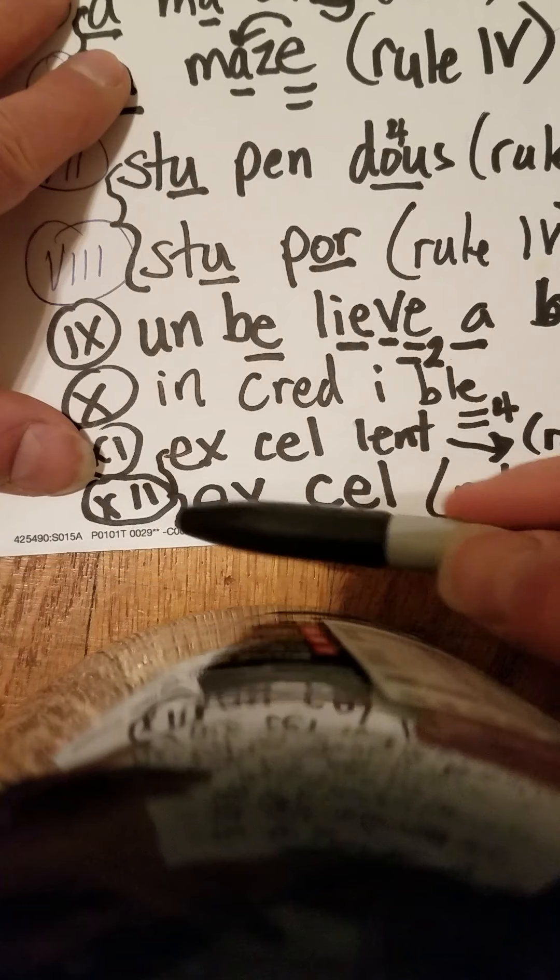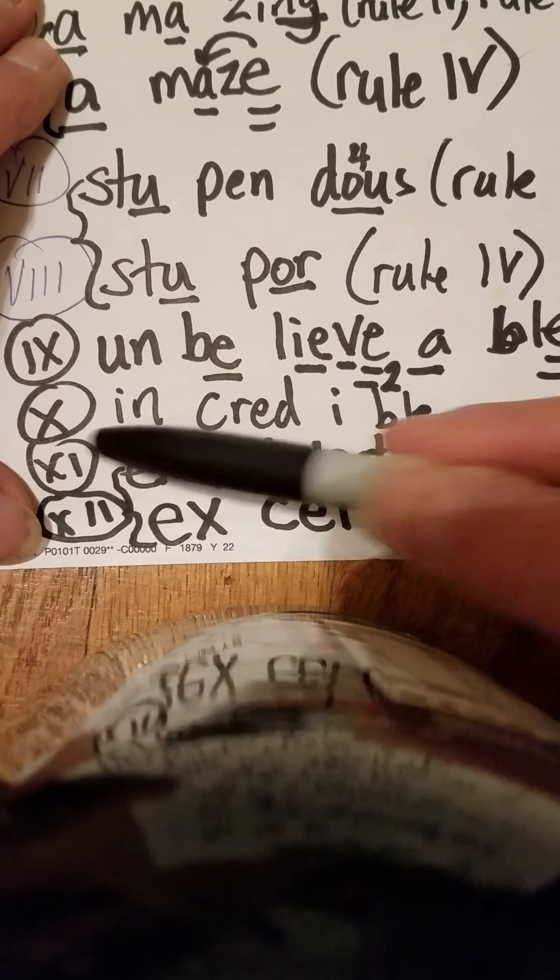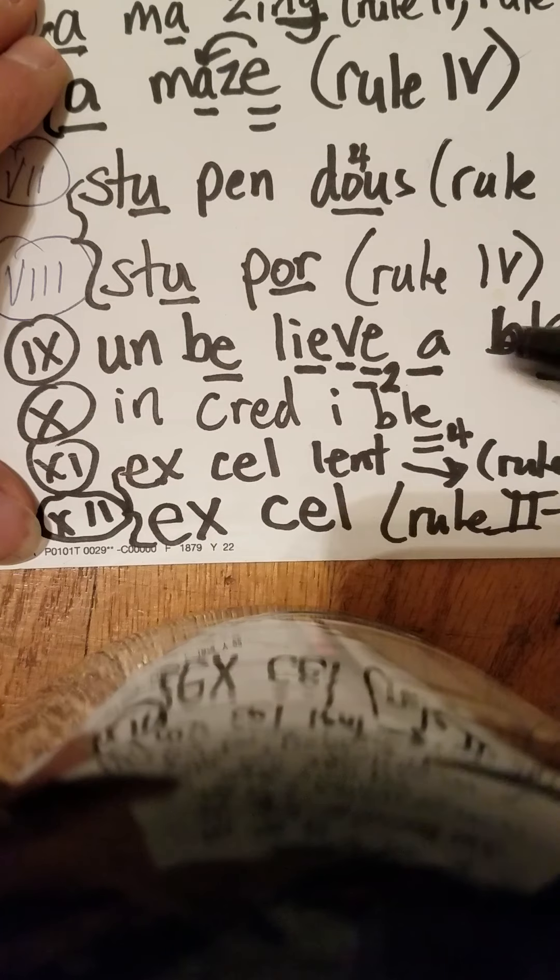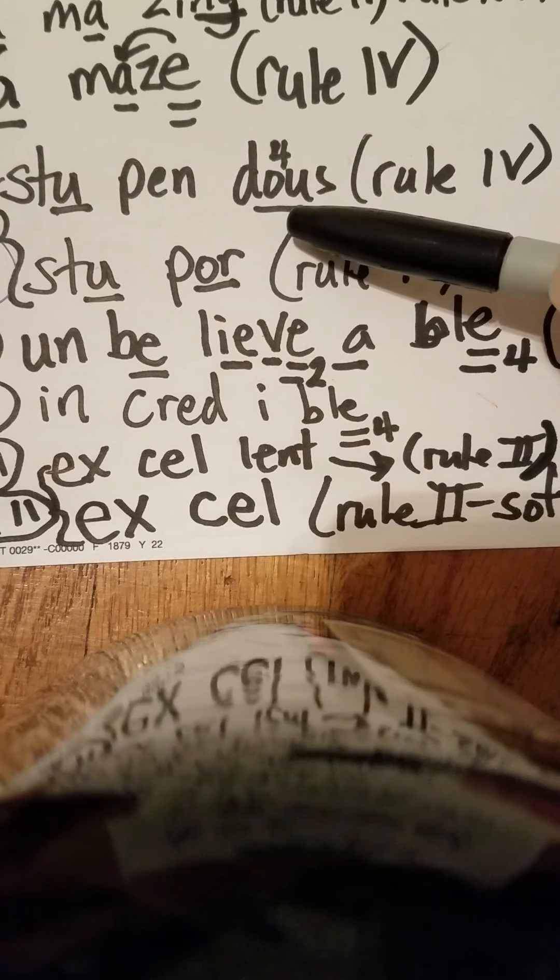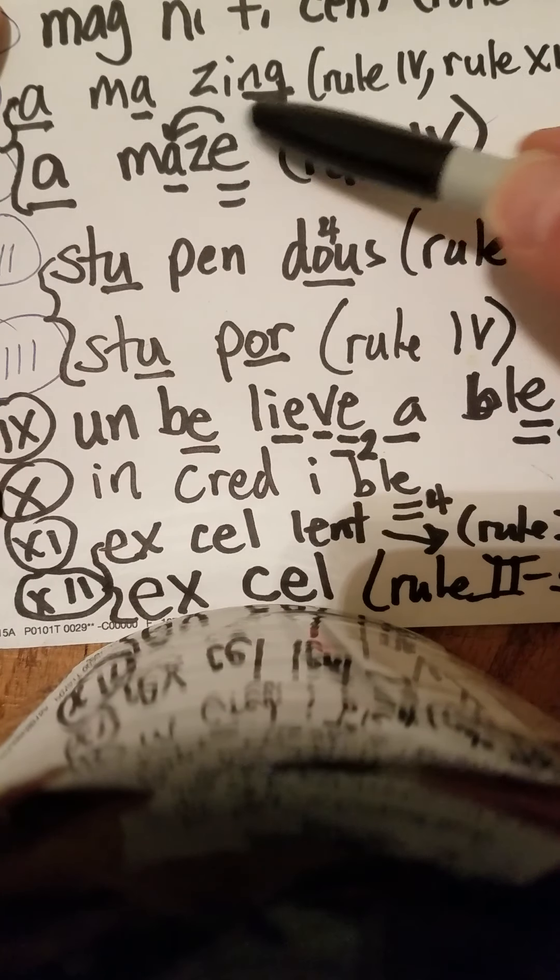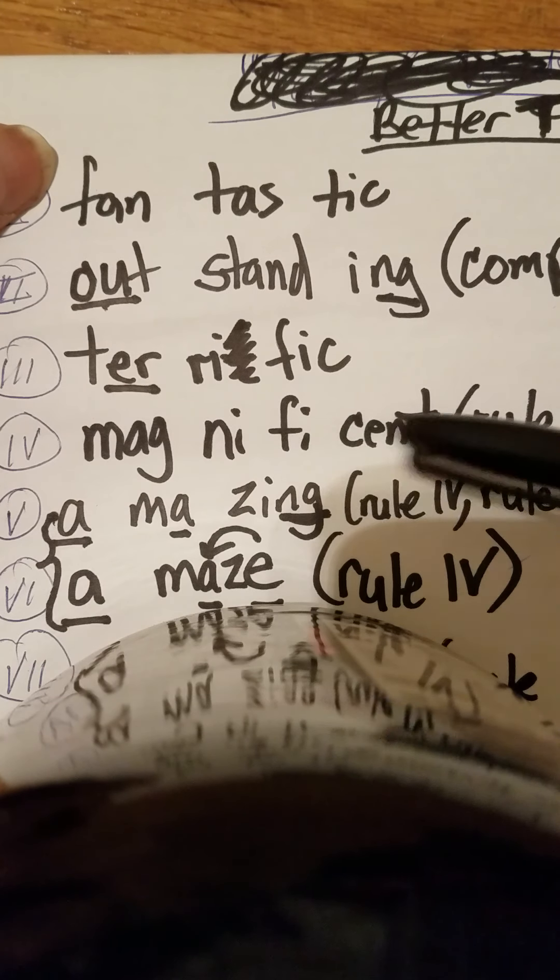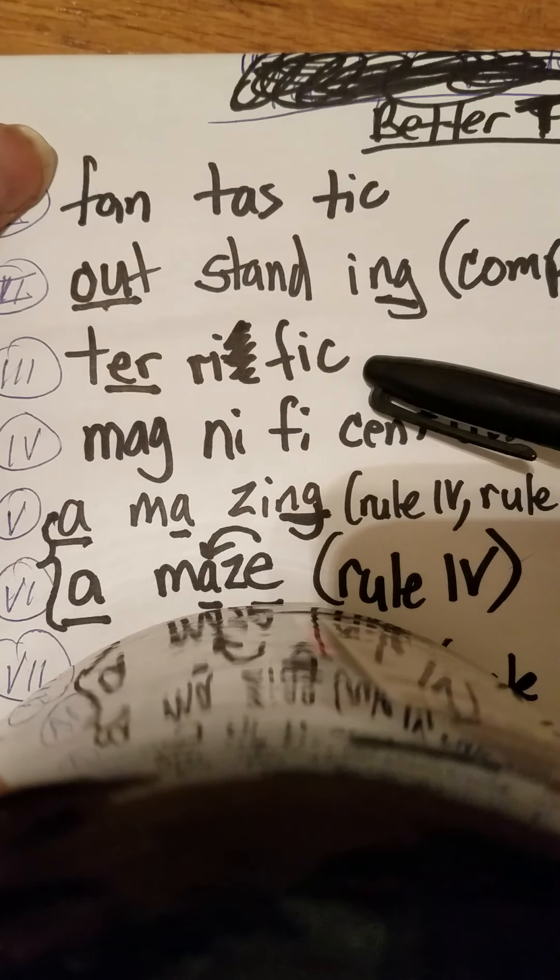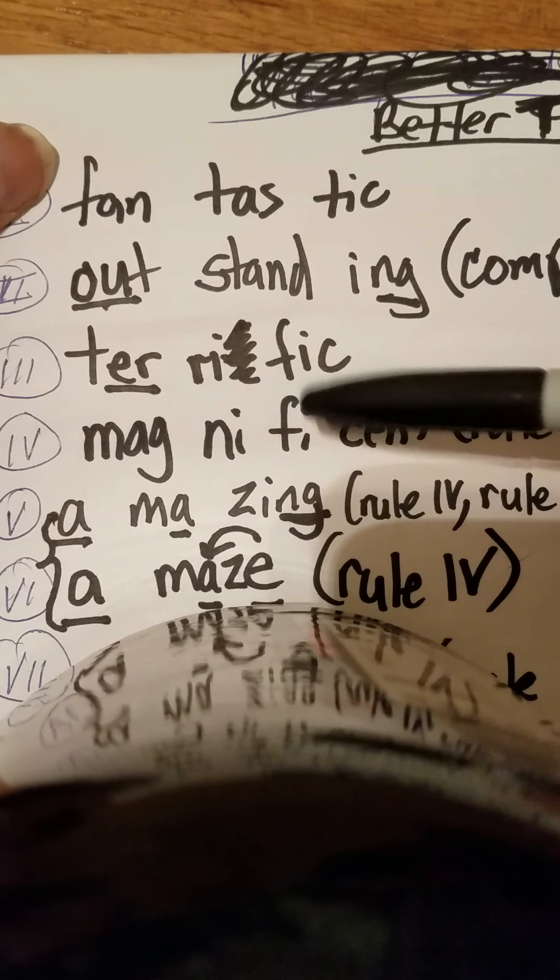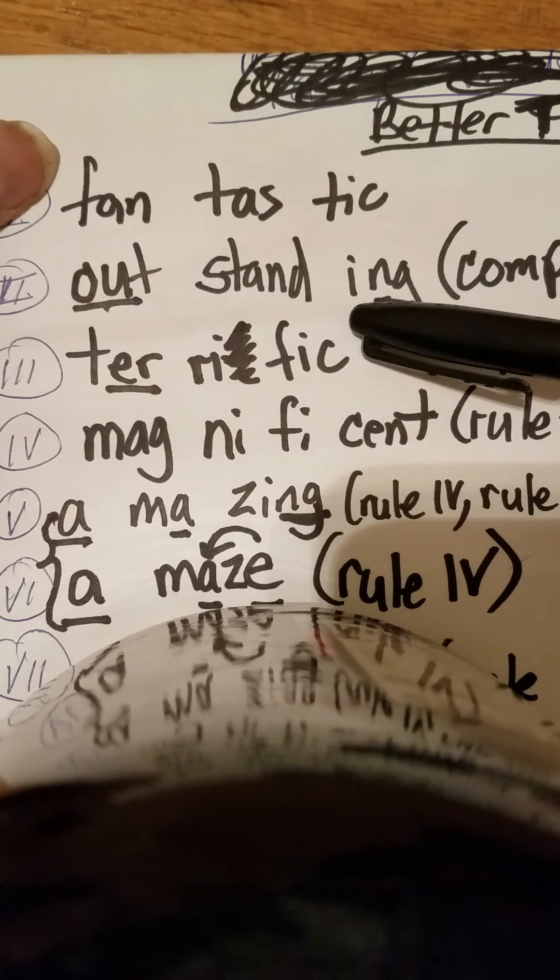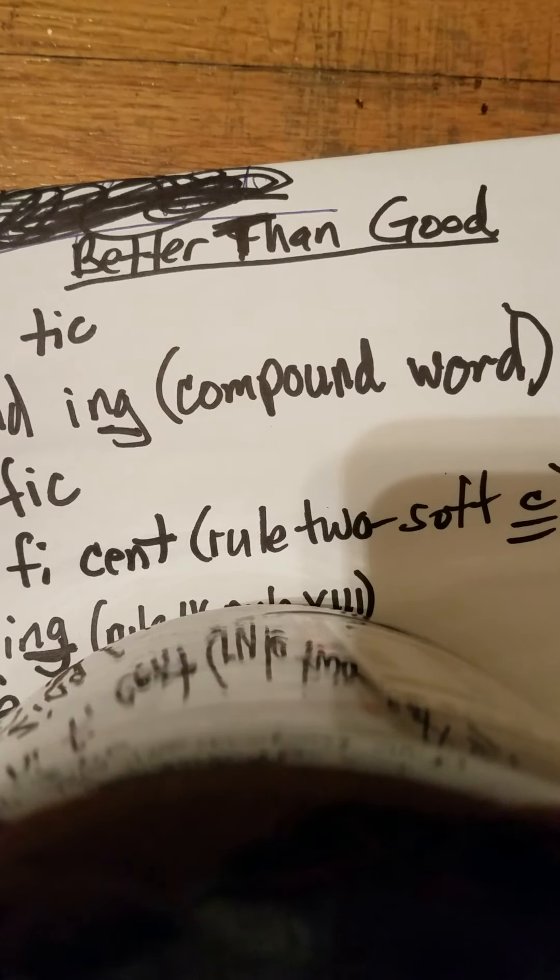So let's do a little bit of a review. Let's go. Excel. Excel. Excellent. Excellent. Incredible. Incredible. Unbelievable. Unbelievable. Stupor. Stupor. Stupendous. Stupendous. Amaze. Amaze. Amazing. Amazing. Magnificent. Magnificent. Terrific. Terrific. And notice we divide the consonant by the syllable by the double consonant. Remember that. Outstanding. Outstanding. Fantastic. Fantastic. And these words are better than good.